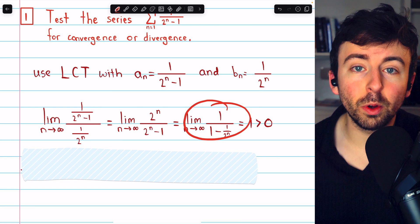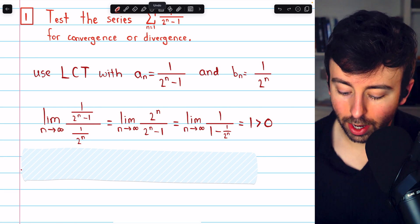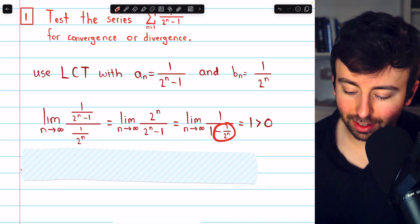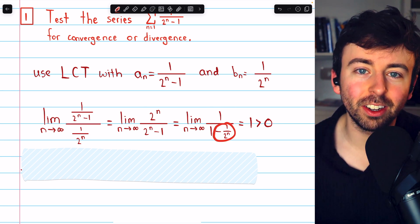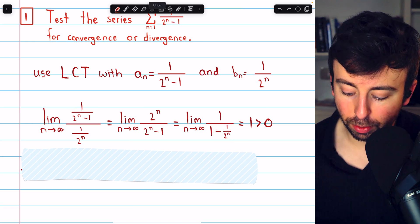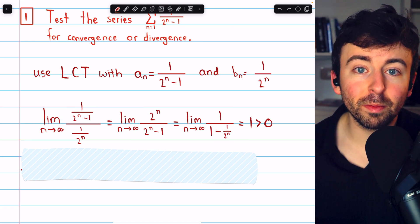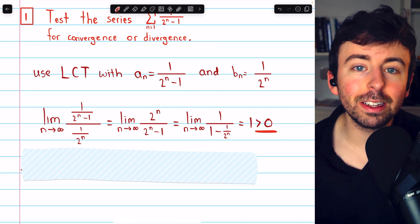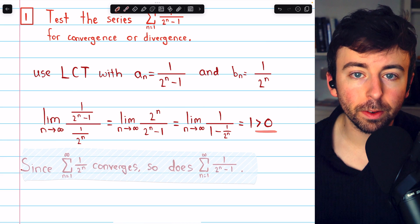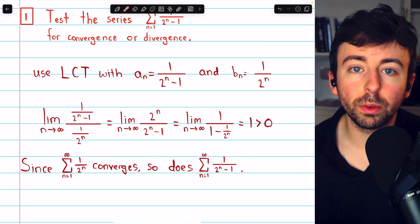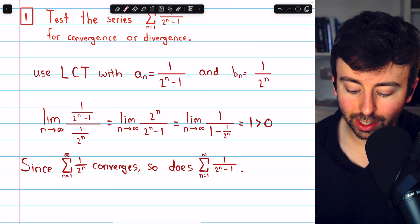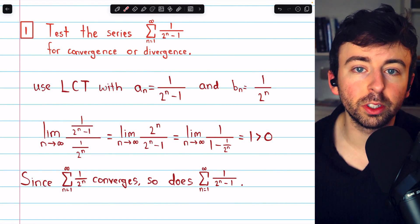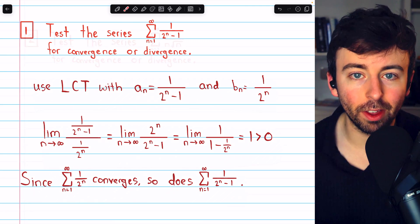This limit is very easy to evaluate — it is clearly 1, because in the denominator we are subtracting something which goes to zero as n goes to infinity, so this approaches 1 over 1, which is 1. That is a finite positive number, so we can conclude the series must have the same behavior. Since the geometric series 1 over 2^n converges, so too does the series 1 over (2^n − 1).